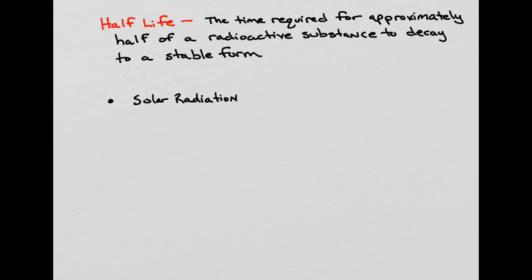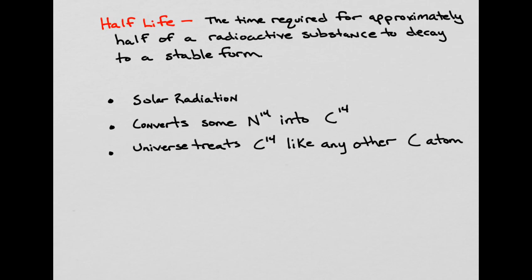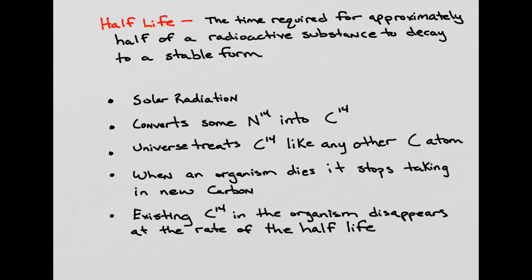Carbon-14 is initially created in the atmosphere by solar radiation. Solar radiation impacts the nitrogen, converting a small fraction of it into carbon-14. The universe treats carbon-14 like any other carbon atom, thereby incorporating it into the global ecosystem — beginning with photosynthesis, getting it into the plant world, and then into the animal world. Essentially, all living creatures have about the same fraction of radiocarbon as does the atmosphere. When an organism dies, it stops taking in new carbon, and the existing carbon-14 disappears at the rate of the half-life.